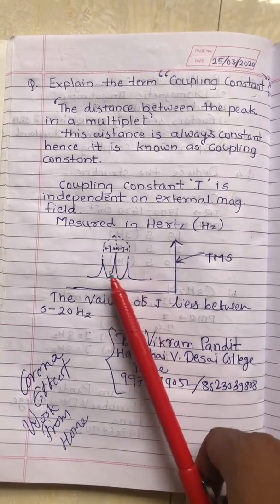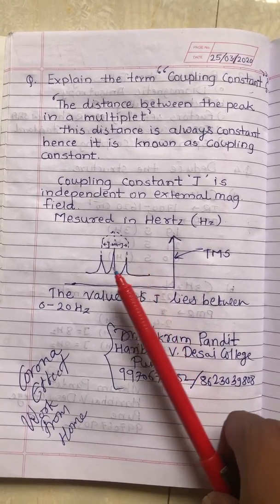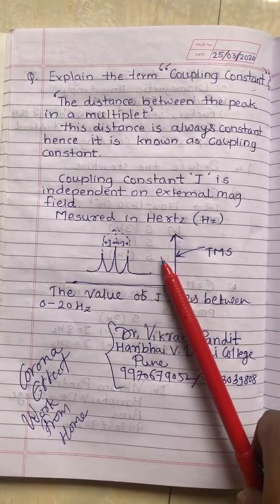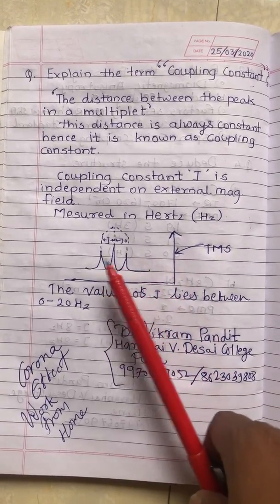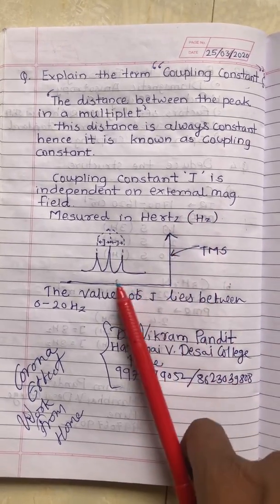It is independent of the external magnetic field. If you use any machine with different magnetic fields, it will always remain constant. The value of this coupling constant J lies between 0 to 20 Hertz.